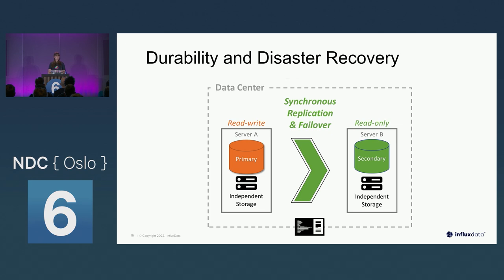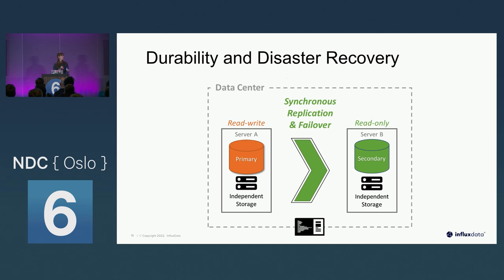Durability and disaster recovery might seem like a given, but it's actually not always the case — it can cost more to maintain a backup database. For mission-critical data like customer data, you want really good durability and disaster recovery. Having fewer durability constraints can result in faster write throughput and lower latency, making the system more responsive for certain workloads — more useful in an analytical setting where you're aggregating data but not super concerned about a little bit of data loss. Sometimes it's about how you set it up, not just how the database sets it up.